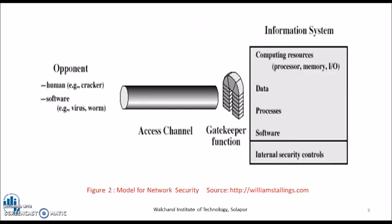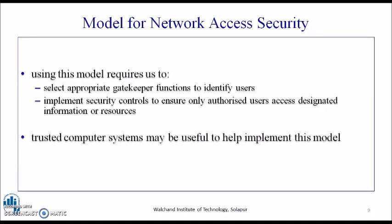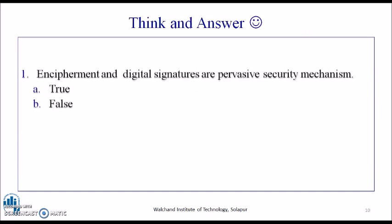There is also a second model for network security showing that data, processes, and software stored on an information system require access control. This can be protected by gatekeeper functions. The opponents could be anyone — a human, cracker, hacker, intruder, software, virus, worm, or Trojan. Gatekeeper functions such as password mechanisms and firewalls must be kept strong to allow only legitimate users to enter. Using this model requires selecting appropriate gatekeeper functions to identify users, and trusted computer systems may be helpful to implement it.